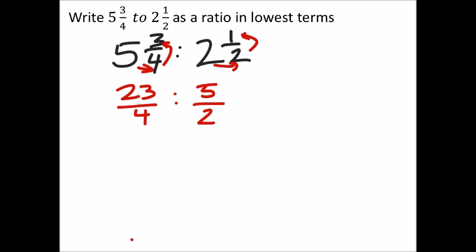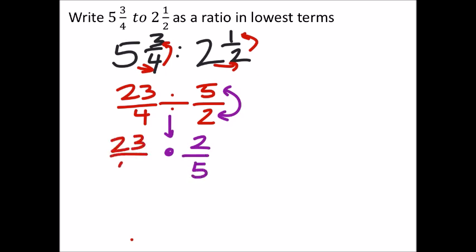Now this is a ratio with the colon, but we can easily replace that with division as well. The problem is that we don't usually divide fractions — we usually multiply them, so to change this into multiplication, we're going to have to reciprocate our divisor, making it 2/5. So I got 23/4 times 2/5.